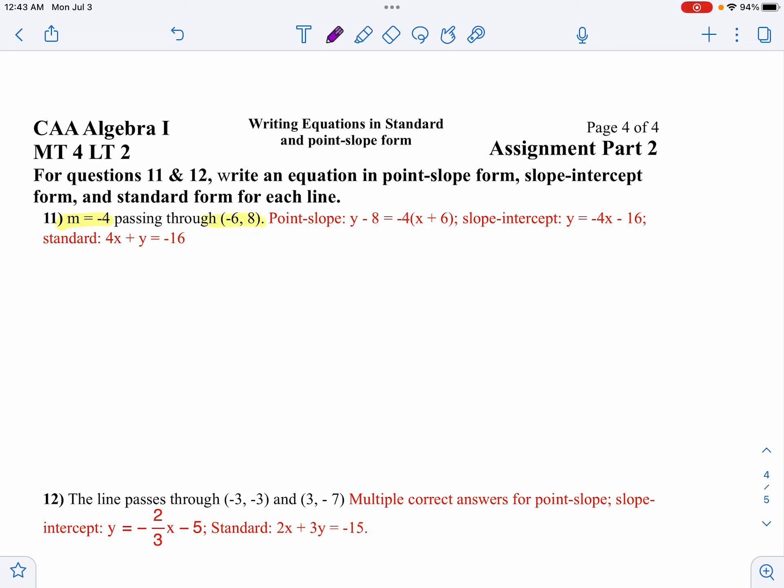So let's just write it in point-slope form. We're going to say y minus 8 equals negative 4 times x minus negative 6, which I think we'll write as x plus 6. So there it is in point-slope form.